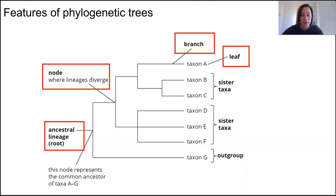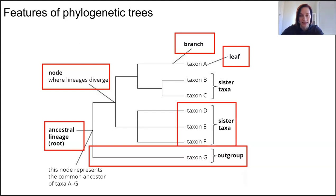We've got nodes at places where there is divergence, and we've got out-groups which are those organisms that are less likely to be closely related. It's included to show a common ancestor which is older and links all those groups. We've also got those sister taxa as well.